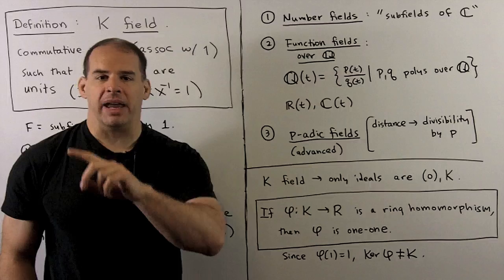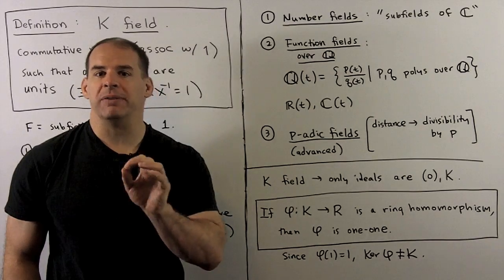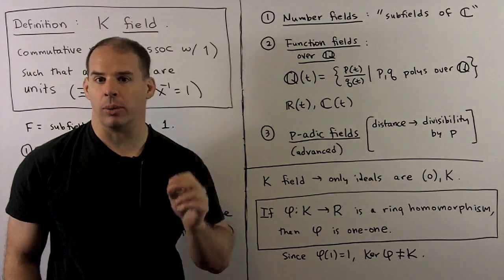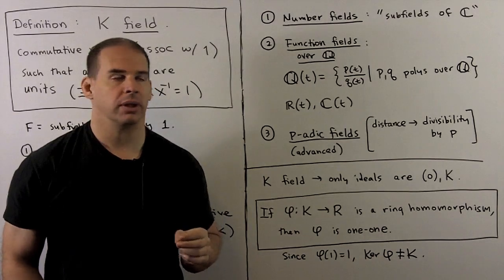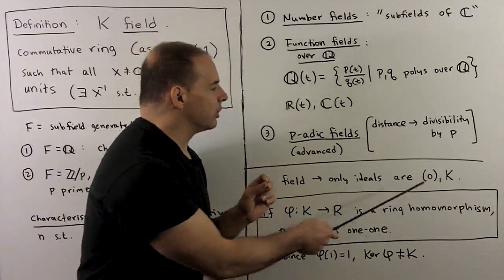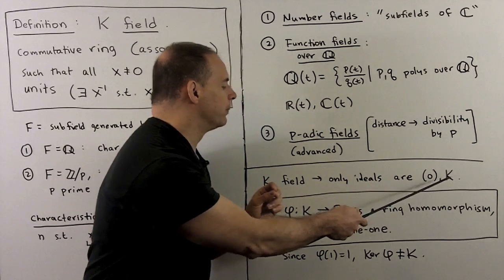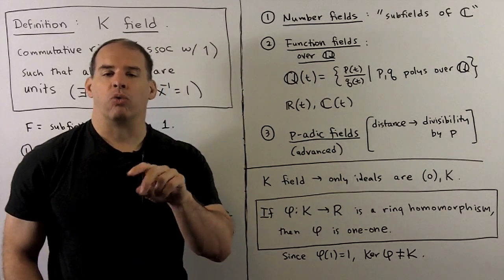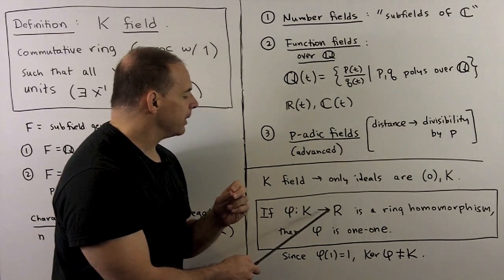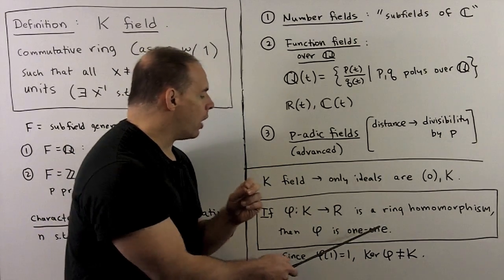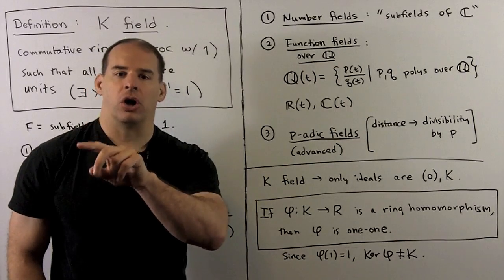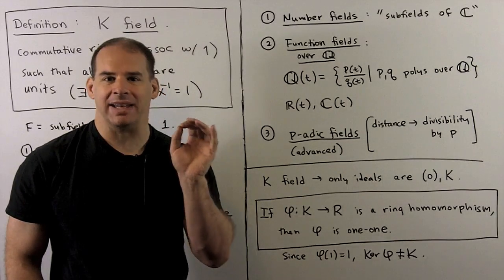A main theme in the course is going to be field automorphisms, so we want to review some results on ring homomorphisms. If k is a field, the only ideals in k are 0 and k itself. So if I have a ring homomorphism phi carrying k to any other ring, phi will have to be one-to-one. Recall, the kernel of a homomorphism must be an ideal.